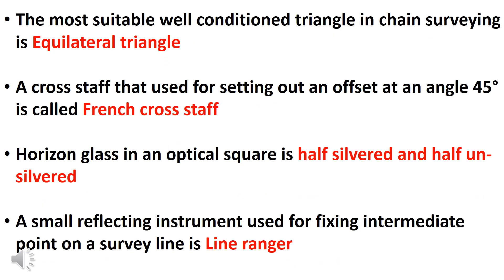The most suitable well-conditioned triangle in chain surveying is the equilateral triangle. A cross staff used for setting out an offset at 45 degrees is called a French cross staff.